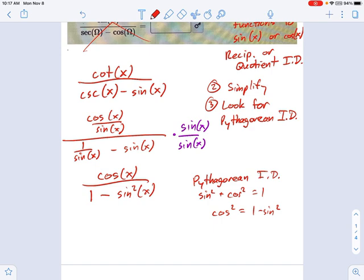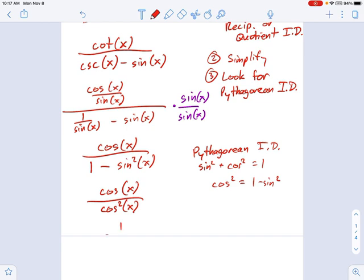So let's turn 1 minus sine squared into cosine squared. We get cosine of x on top, that hasn't changed, divided by cosine squared of x on bottom. Well, now we cancel some things out, and we just get 1 on top with a single factor of cosine on bottom.